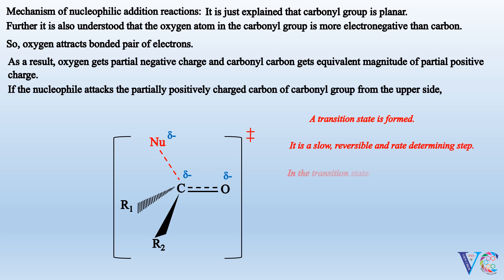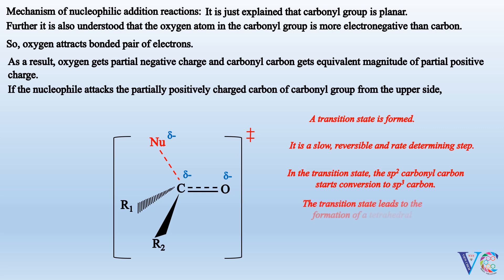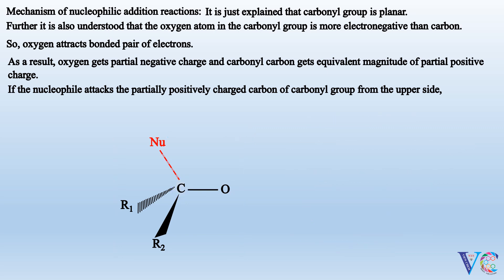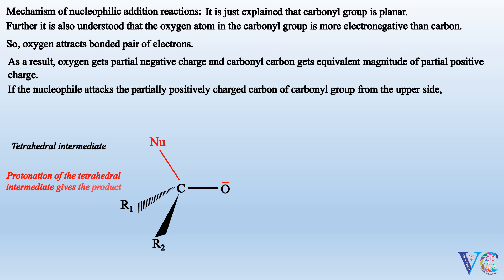The transition state leads to the formation of a tetrahedral intermediate, in which the sp2 carbonyl carbon completely converts to sp3 carbon. Protonation of the anion gives the product. It is a faster step.